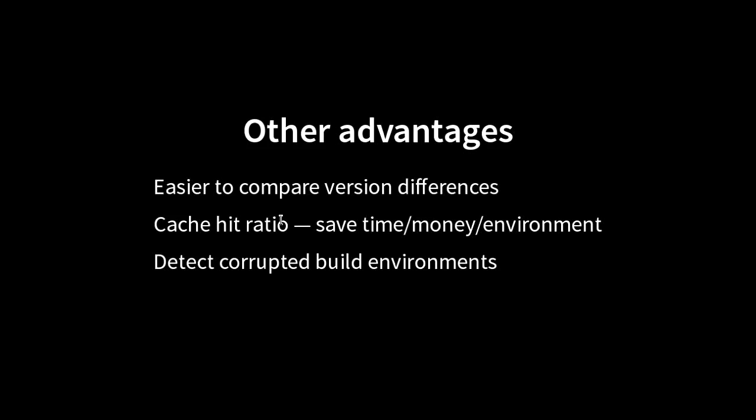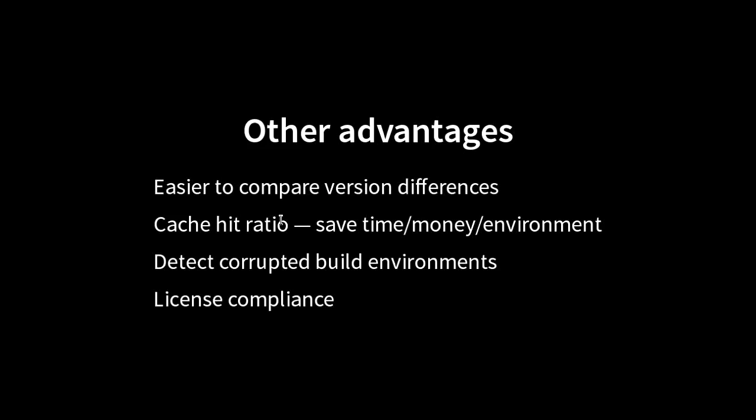Reproducible builds also helps detect corrupted build environments. If something is randomly installed on your machine, if your build is not reproducible, you find out quickly because you get different results — for example, if you're using the wrong GCC because of a weird symlink. It also helps with license compliance: if a vendor provides binaries and source, and you compile it yourself and get the exact same checksum, you know the binaries correspond to that source. That means they've provided all the necessary source, which is useful for GPL compliance.